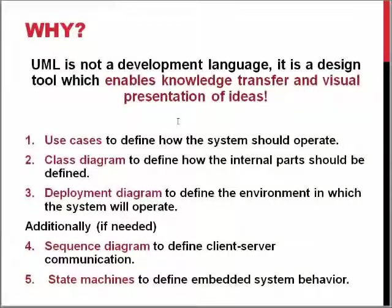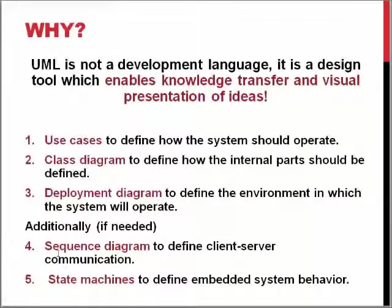Here's a summary of how these more useful diagrams function: use cases define how the system should operate, while the class diagram defines how the internal parts should be structured. The deployment diagram defines the environment in which the system will operate and gives an idea of what components we need to create. Additionally, if we are doing something with client-server communication, we add sequence diagrams; if we have rigid timing or order of operations, the sequence diagram is also useful. And if we are doing an embedded system, we use state machines to define that behavior.